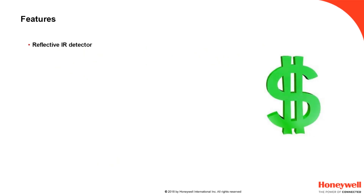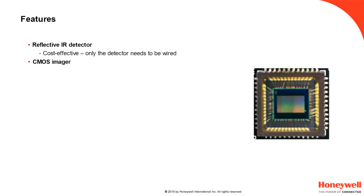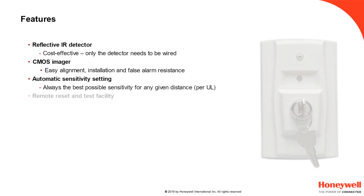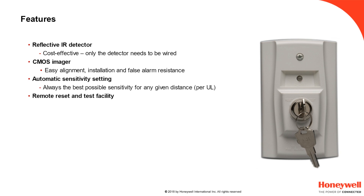Features: A reflective IR detector. Cost effective — only the detector needs to be wired in. A CMOS imager for easy alignment, installation and false alarm resistance. Automatic sensitivity settings — always the best possible sensitivity for any given distance per UL requirements. Remote test and reset facilities, electronic smoke test, and compatibility with RTS151 key.